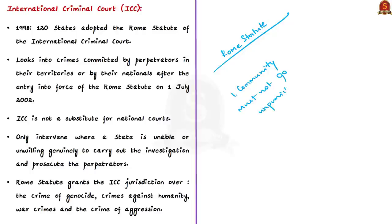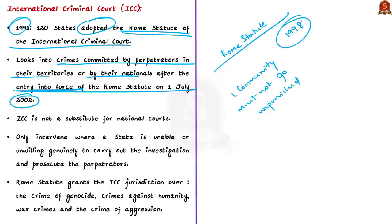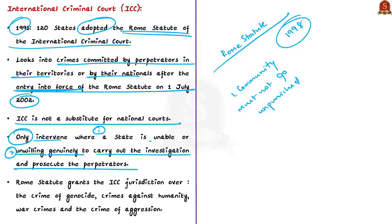In 1998, around 120 states adopted a statute in Rome — the Rome Statute of the International Criminal Court — which established the ICC. The court handles crimes committed in member states' territories or by their nationals after the entry into force of the Rome Statute on 1st July 2002. It is not a substitute for national courts and can only intervene when a state is unable or unwilling to investigate and prosecute perpetrators.